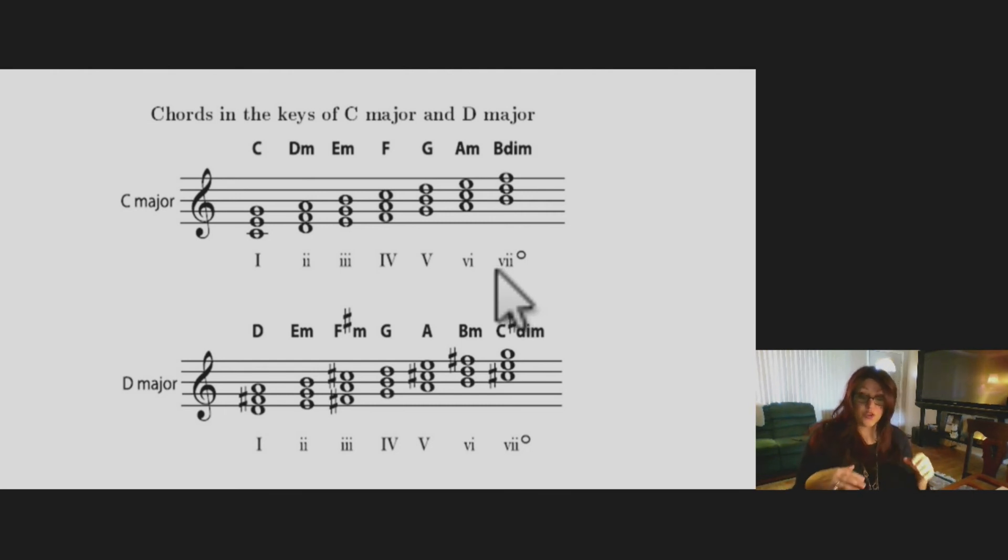Another kind of chord is a chromatically altered chord, where it is not part of the key. So as an example, if the sixth chord were not minor, if it were a major triad, that would mean it was a chromatically altered chord, which you have a lot in jazz music.